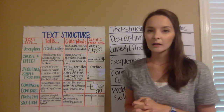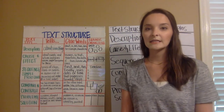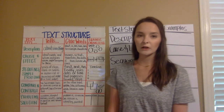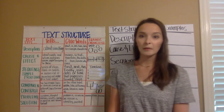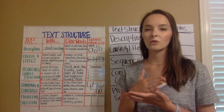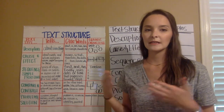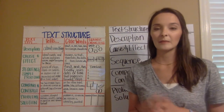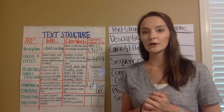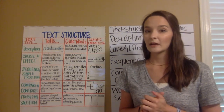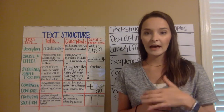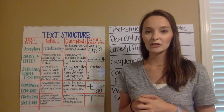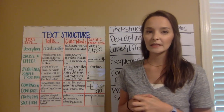The third text structure we're going to talk about is sequence — something you've probably learned since kindergarten. A sequence is just the order that events happen in, the steps something happens in. It might be in number order, in order of years, or it might show somebody's age when each thing happened.